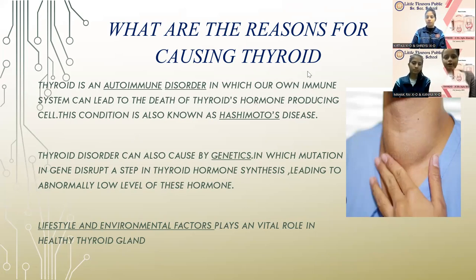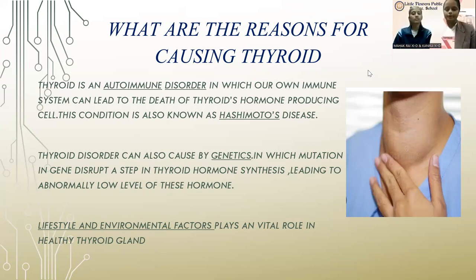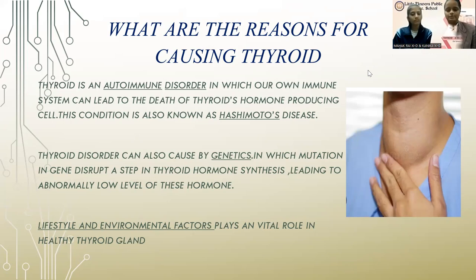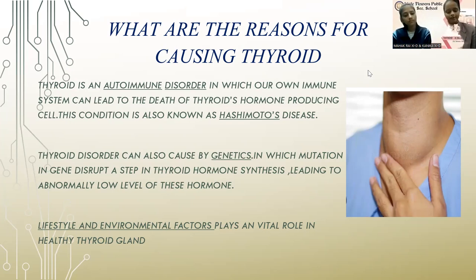What are the reasons for causing thyroid disorders? Thyroid is an autoimmune disorder in which our own immune system can lead to the death of thyroid hormone-producing cells. This condition is also known as Hashimoto's disease. Thyroid disorders can also be caused by genetics, in which mutations in genes can disrupt a step in thyroid hormone synthesis, leading to abnormally low levels of this hormone. Our lifestyle and environmental factors also play a vital role in healthy thyroid gland functioning.